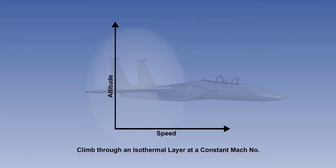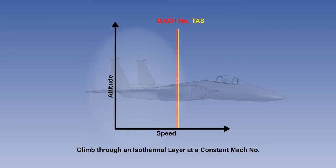Suppose our aircraft now has to climb through an isothermal layer at a constant Mach number. An isothermal layer is a layer of air where the temperature of the air does not change with altitude. Applying the same logic, we know the temperature of the air will not change. Therefore, the LSS will not change, and neither will the TAS if the Mach number is to remain constant. The CAS will change, however, as the air density changes. The density relationship between TAS and CAS means that as altitude is gained, if the TAS remains constant, the CAS must decrease. The CAS will therefore reduce in the climb.